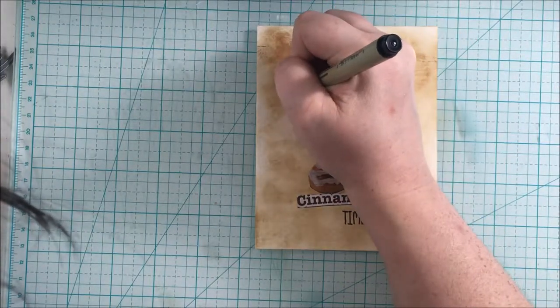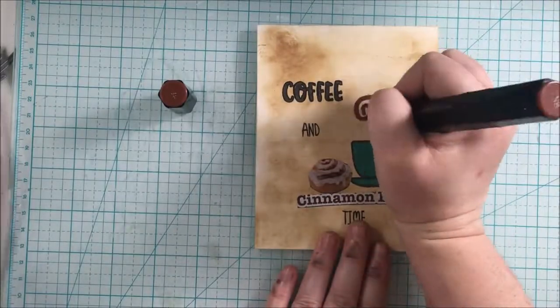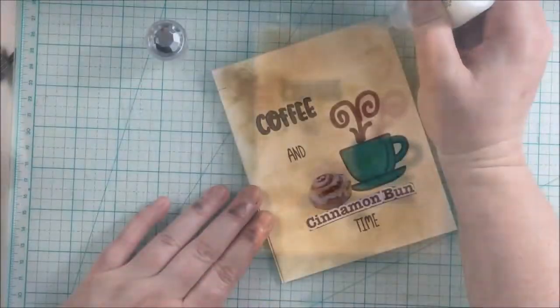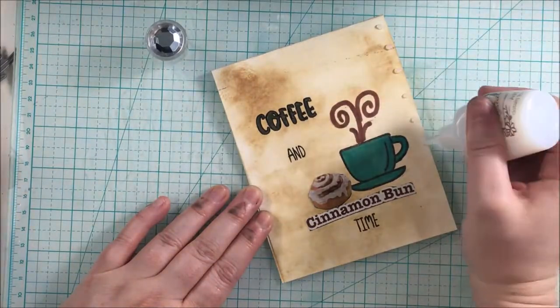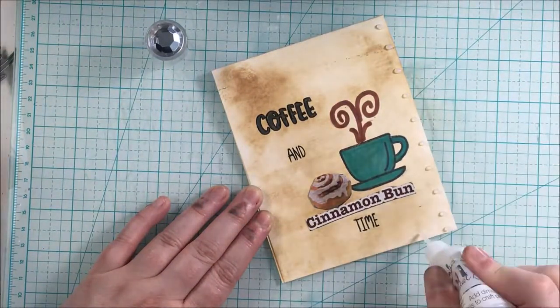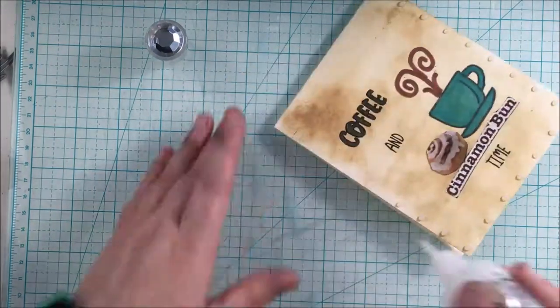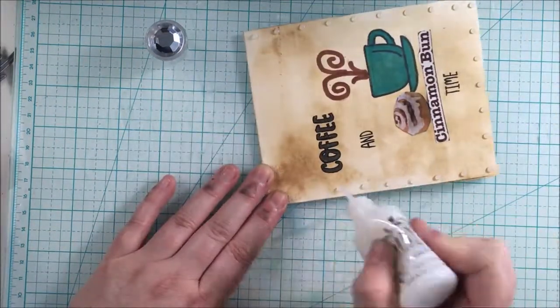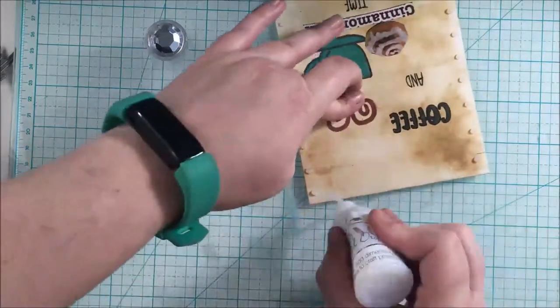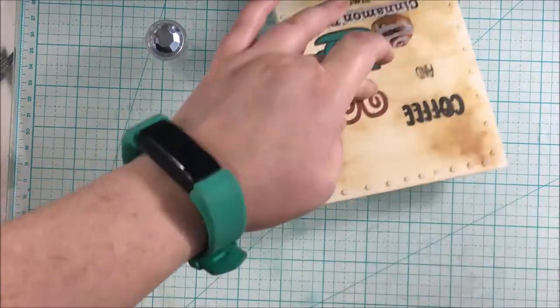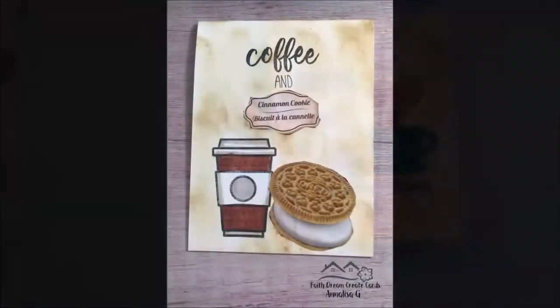Then I just took a Spectrum marker again and outlined the steam on the coffee cup to make it stand out a little more. To finish off this card I used Morning Dew Nouveau Drops just around the edges to add a little bit more and I really like how it turned out.